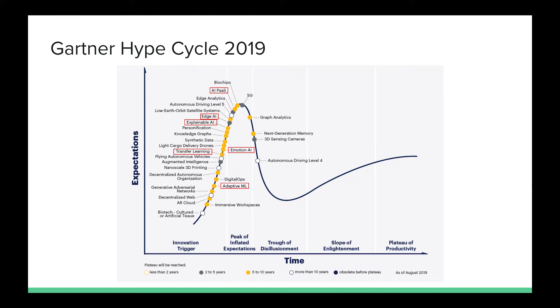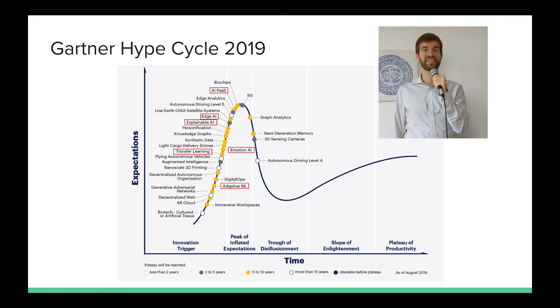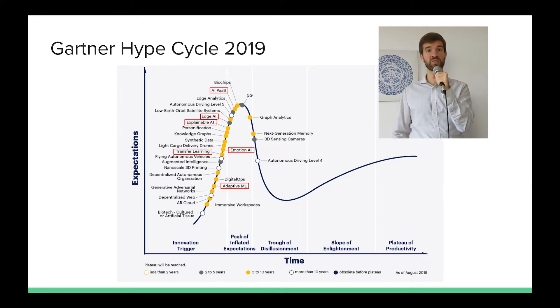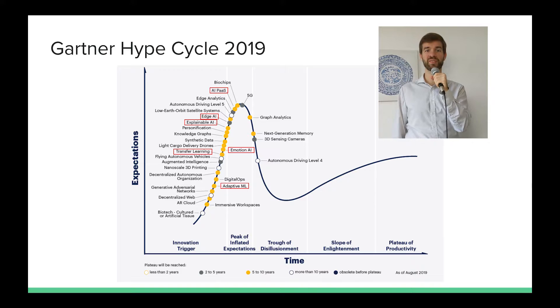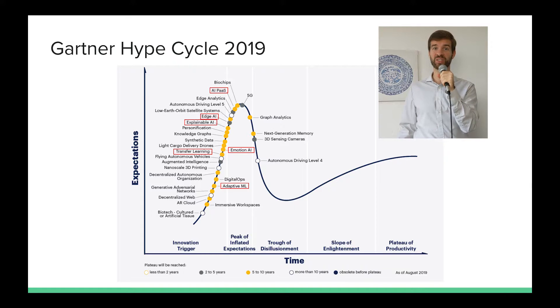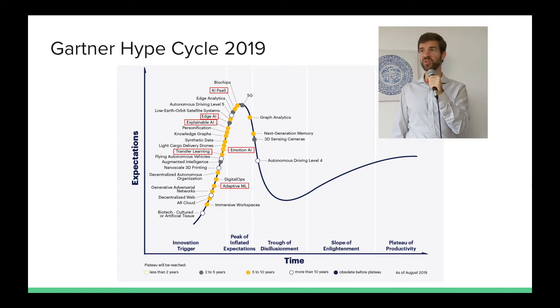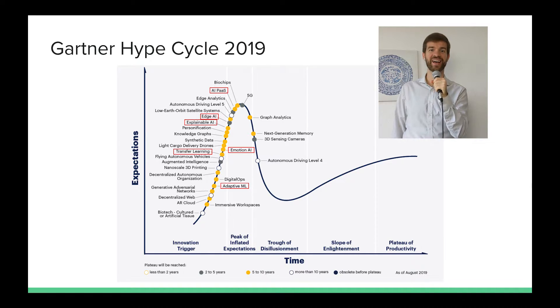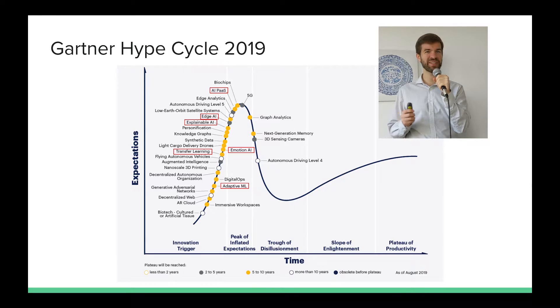This year the Gartner hype cycle again takes about six different topics that are related to deep learning, AI, and machine learning. Some things like transfer learning, emotion AI, and explainable AI are on the rise — because if you just have a black box and you don't know what's going on under the hood, that's not ideal. Applied deep learning is, according to Gartner, at the peak of inflated expectations. The idea of this course is that you get a solid understanding of what you can and cannot do with it.